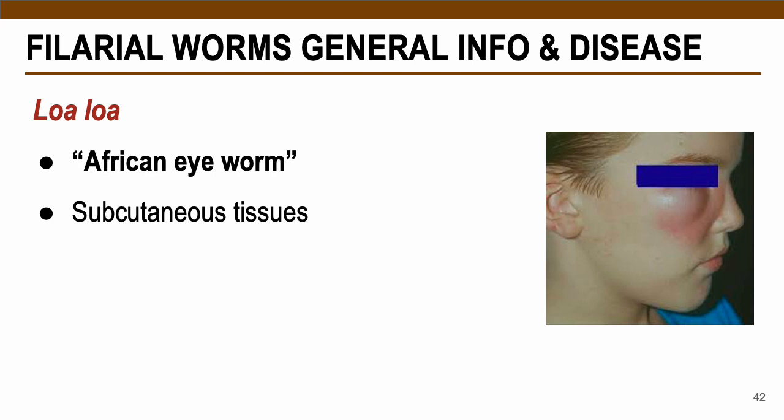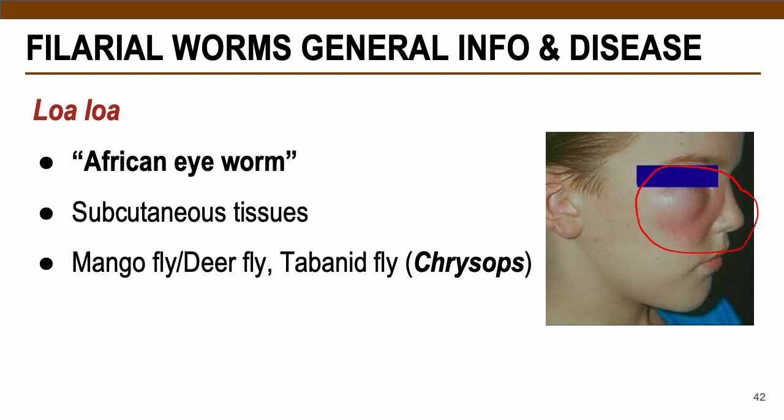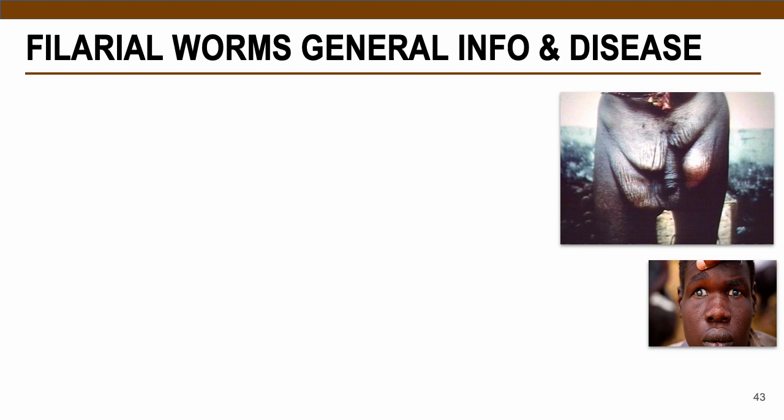Loa loa (African eye worm) attacks the subcutaneous tissue, specifically the eye area of the patient causing swelling. The vector or intermediate host is the mango fly, deer fly, or tabanid fly under genus Chrysops. The disease is Calabar swelling or fugitive swelling.